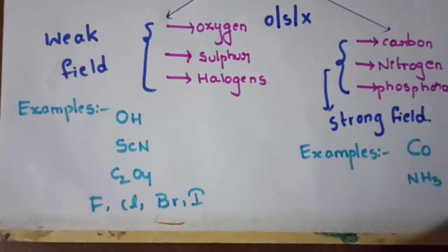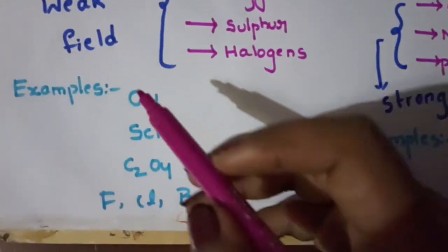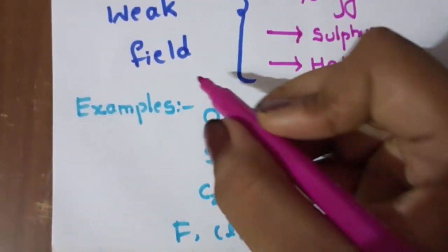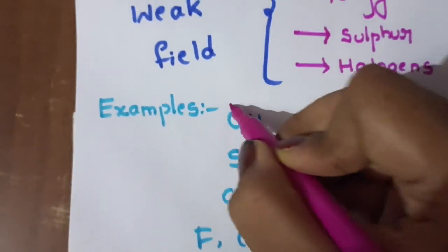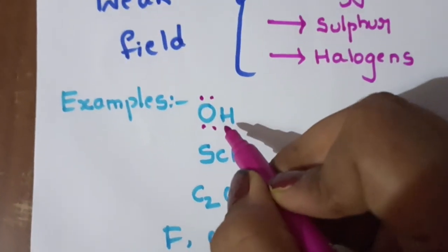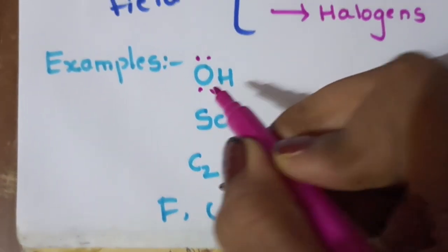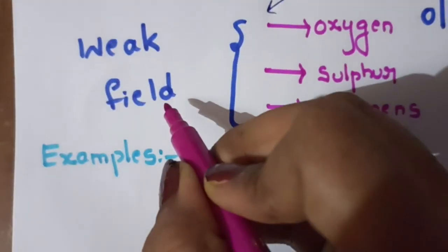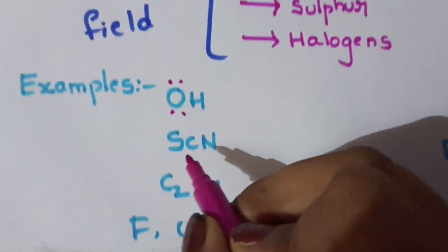Let's look at some examples. Here the donor atom is Oxygen, so this is a weak field ion. Oxygen donor atom is a weak field ion.